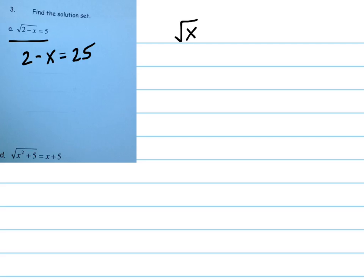For example, if you said the square root of x equals negative 3 and you squared both sides, you would think that maybe x equals 9, but that's not true. So you gotta check your answer when you're done.